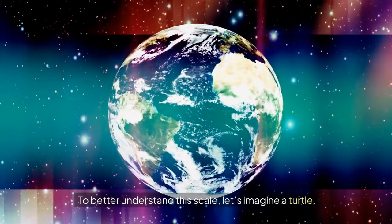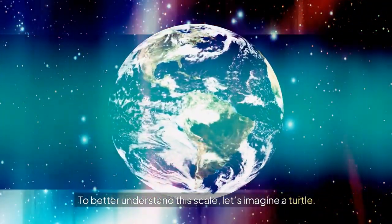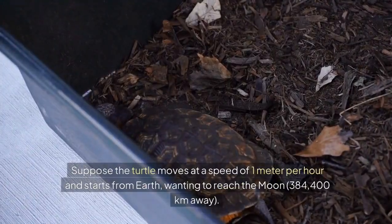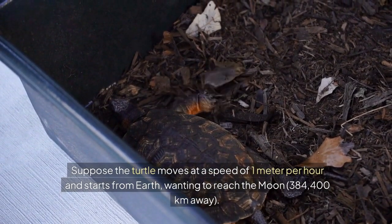Example 1: The turtle versus light. To better understand this scale, let's imagine a turtle. Suppose the turtle moves at a speed of 1 meter per hour and starts from Earth,